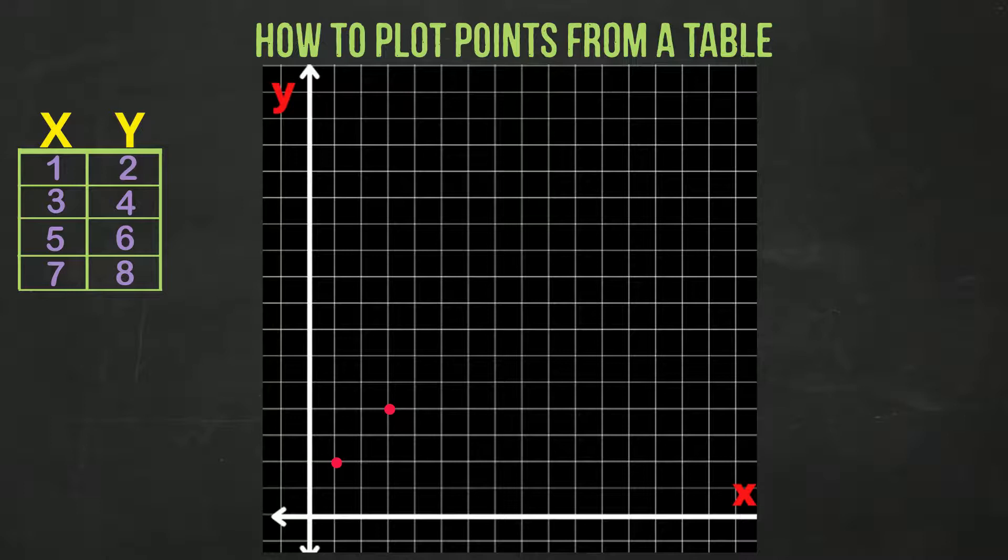The third entry has x at a value of 5 and y at a value of 6. We move to the right 5 places and move up 6 and plot our point here.